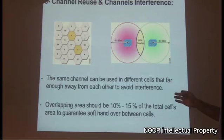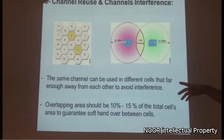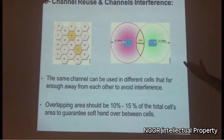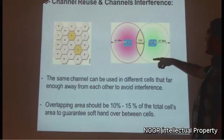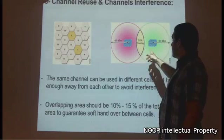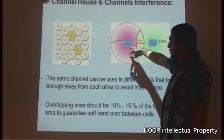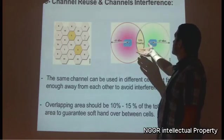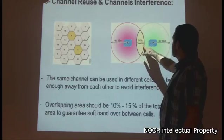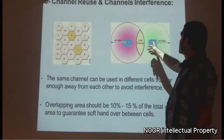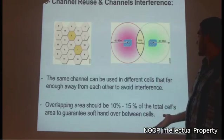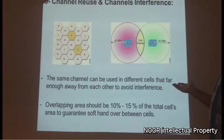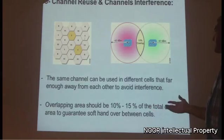When designing a wireless LAN, you should include an overlapping area between each cell. This is because if a client is moving from one area to another, when the signal from the first access point becomes weak or disconnects, the overlap area ensures the device seamlessly connects to the next access point — this is called a smooth handover. Overlapping areas should be 10% to 15% of the total cell area to guarantee soft handover between cells.